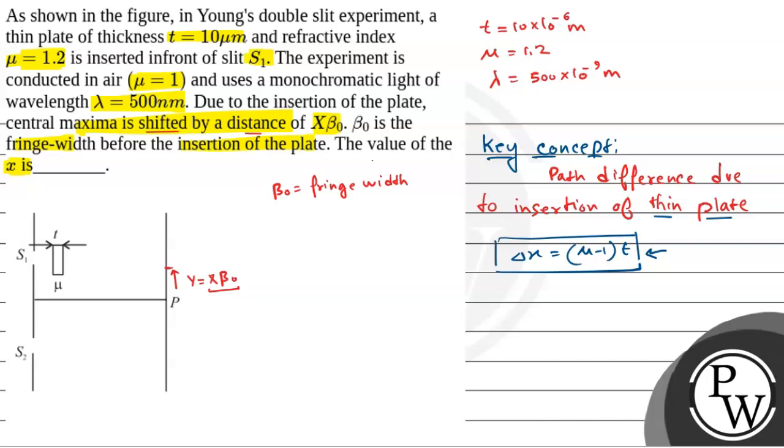Now when the thin plate is inserted, the shift in the central maxima, let's say y, is the shift in central maxima. So y is equal to path difference del x into capital D by small d, where capital D is the distance between the slits and the screen and small d is the slit separation.